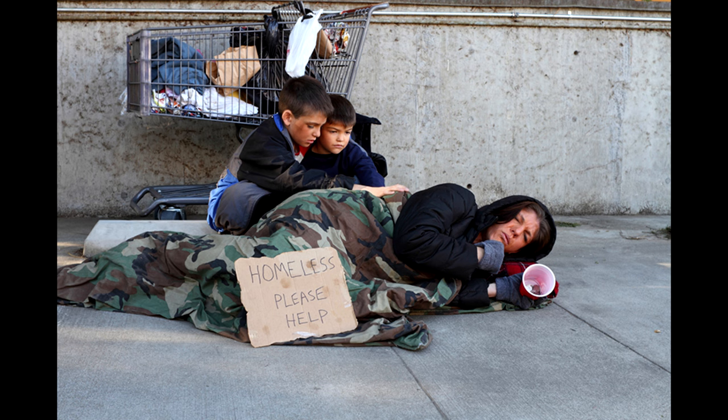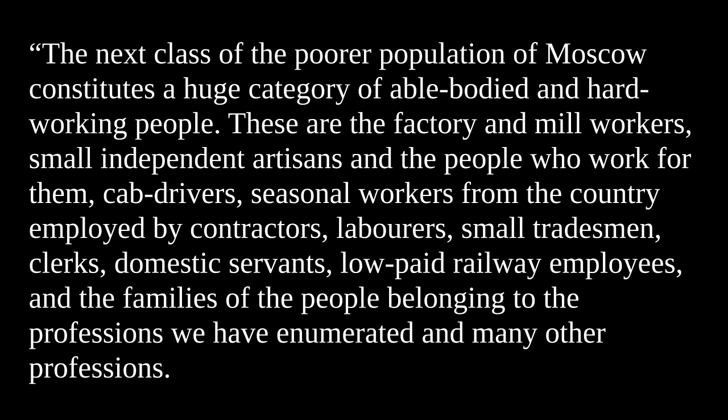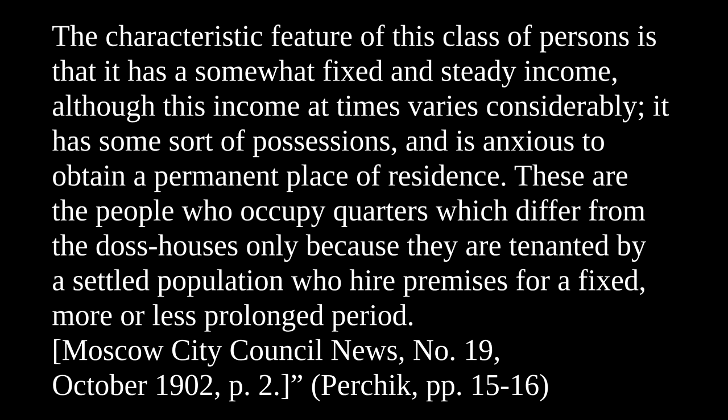Does this description differ at all from the situation of the homeless in modern USA? Bemer continues: "The next class of the poorer population of Moscow constitutes a huge category of able-bodied and hard-working people. These are the factory and mill workers, small independent artisans and the people who work for them, seasonal workers from the country employed by contractors, laborers, small tradesmen, clerks, domestic servants, low-paid railway employees, and their families." The characteristic feature of this class is that it has a somewhat fixed and steady income. These are the people who occupy quarters which differ from the dosshouses only because they are tenanted by a settled population who hire premises for a fixed, more or less prolonged period.